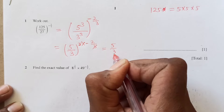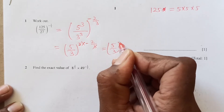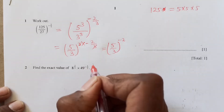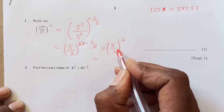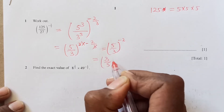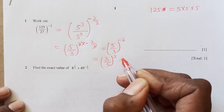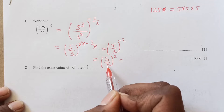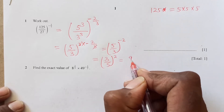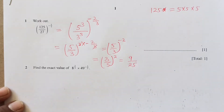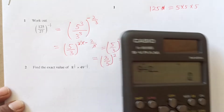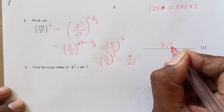So we are left with (5/3)^(negative 2). According to the exponent rules, when the power is negative 2 we take the reciprocal: (3/5)^2. That means 3^2 over 5^2, which is 9 over 25. So we can write down 9 over 25, or dividing it gives 0.36.